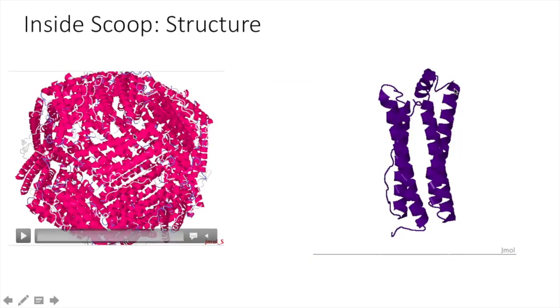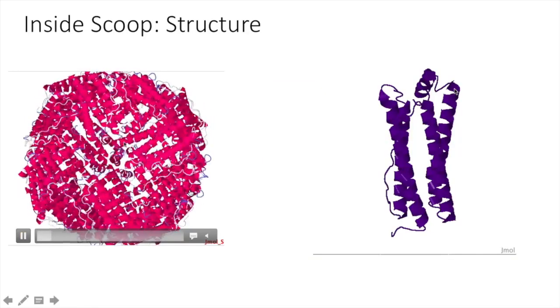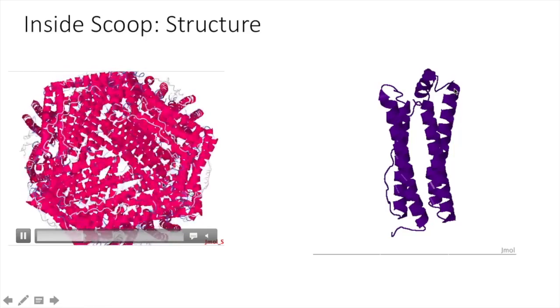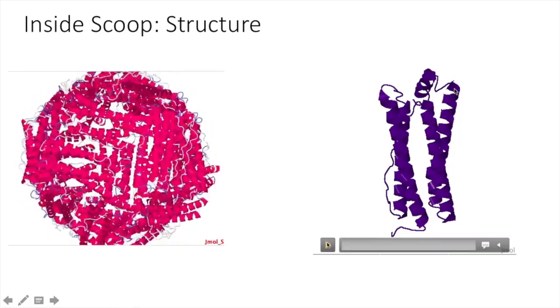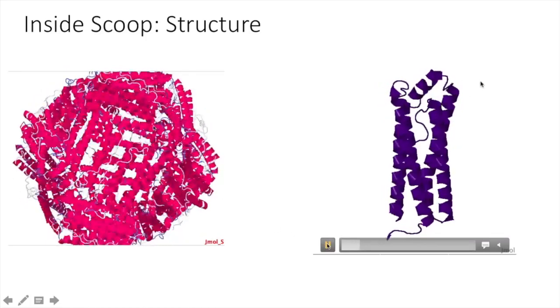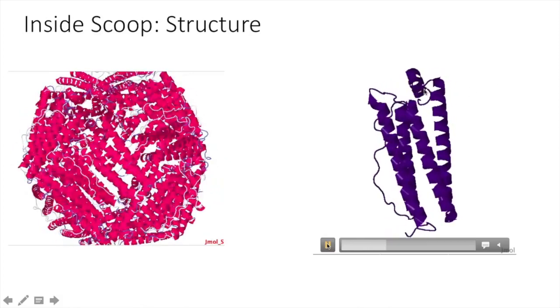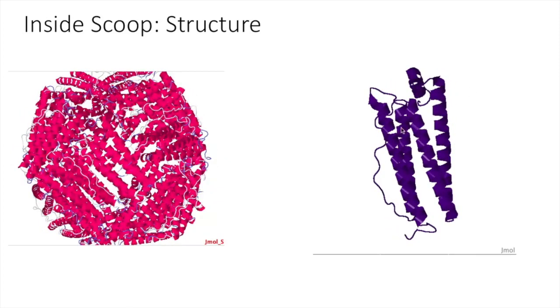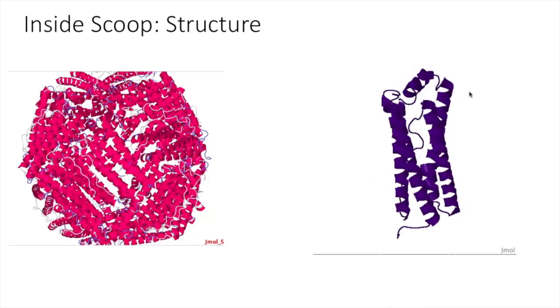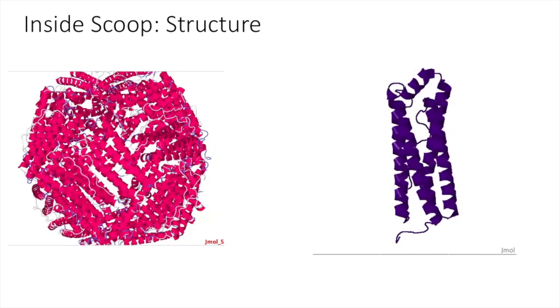Ferritin is made up of 24 peptide subunits that assemble into a hollow sphere, and there are two main chains. Alpha helices comprise the molecule, and the molecule is split into five helical regions. There are four long helices that make a four-helix bundle. A structural motif in ferritin is a globin fold.